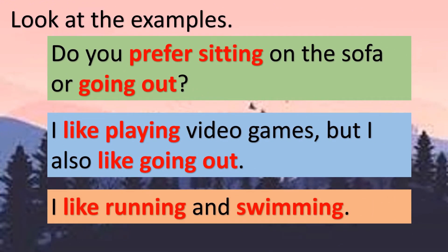Look at the examples. You have 3 examples. Let's read. Do you prefer sitting on the sofa or going out? I like playing video games but I also like going out. I like running and swimming. If you notice the red coloured words, you can see -ing: sitting, going, playing, going, running, and swimming.